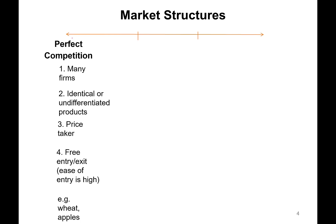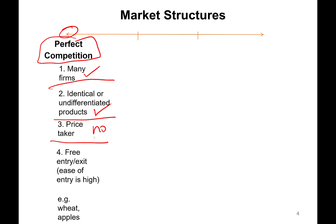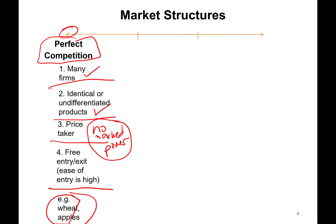Here is the market structure spectrum. On one extreme we have perfect competition, characterized by many firms producing identical or undifferentiated products. They are price takers with no market power. There's free entry and exit, so ease of entry is high and entry is not blocked. Examples include wheat and apples — basically agriculture is a perfectly competitive industry.